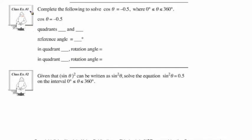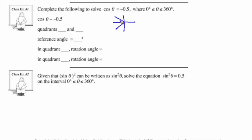Let's use these skills in class example number one and try to solve cos θ = -0.5, where we're looking at θ between 0 and 360 degrees inclusive. Since the value is negative, which quadrants are we going to be in? Well, if we draw the grid here, since cos is negative, that's going to be in quadrant 2 and quadrant 3. So we have these reference angles right here and right here — quadrant 2 and quadrant 3.